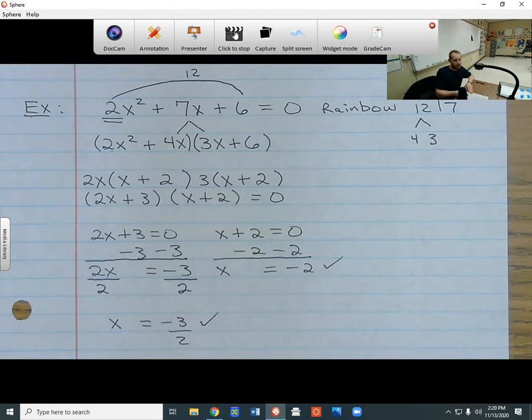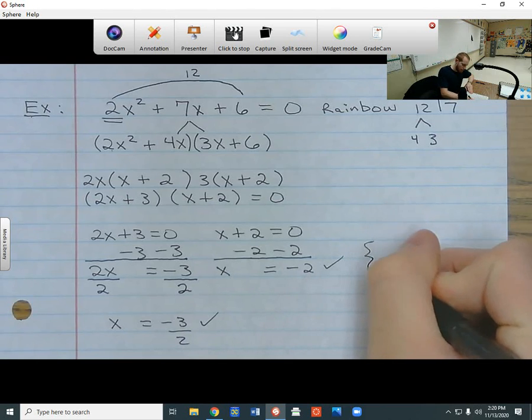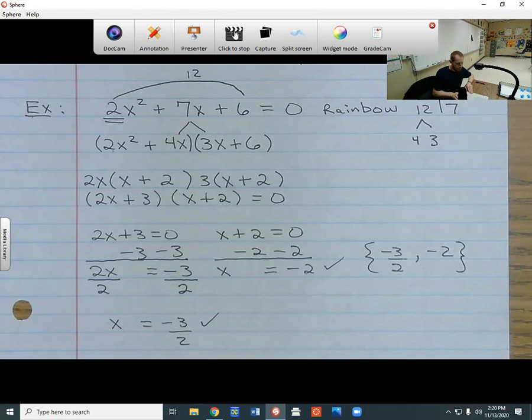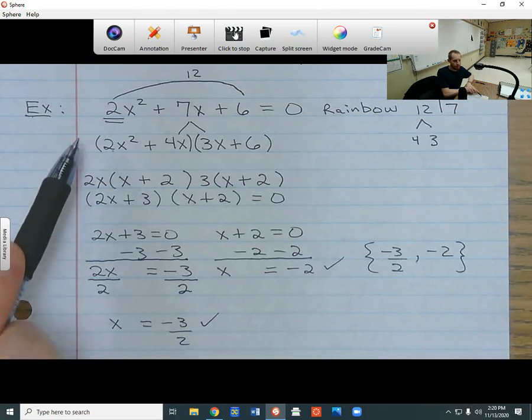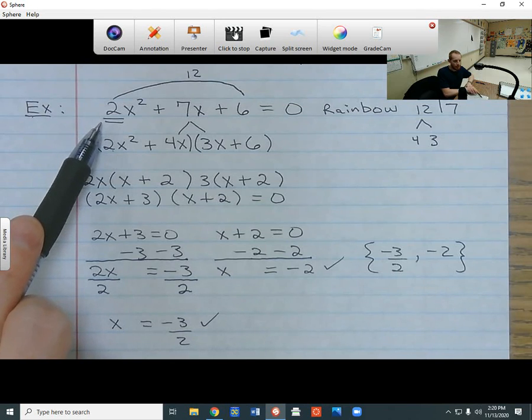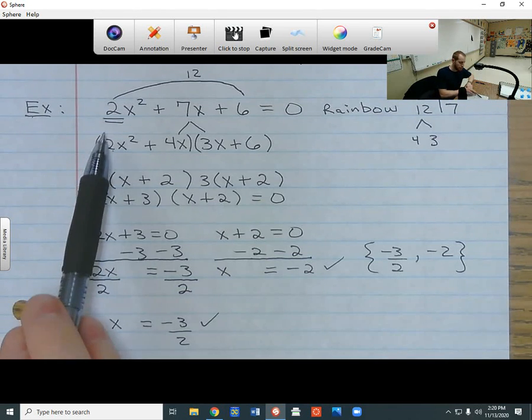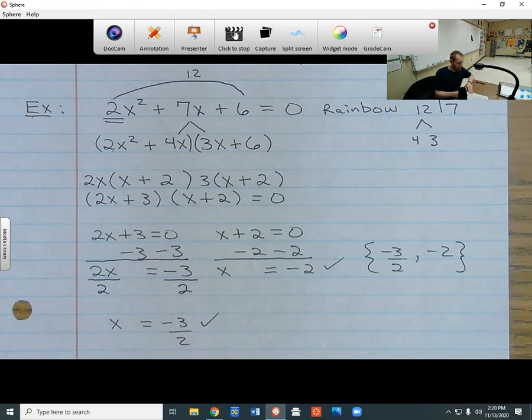So now that I know what my two answers are, I can write them in a solution set. So I'm going to put in negative 3 over 2 and negative 2. So notice my two answers. One of them is going to be a fraction, and the reason why this one is a fraction is because of my leading coefficient up here. So notice when I said I had a leading coefficient of 2, that's how I know I need to do the rainbow method to solve this. And that's exactly why I have a 2 in the denominator. It's to account for this 2 up here. So I hope that helps you. That's how you solve quadratic equations by rainbow method.